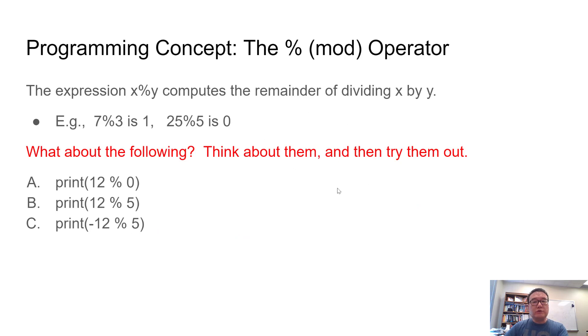The natural way to do it in programming is to use the mod operator, which is expressed using this percent symbol. When we write x mod y, that means we want the remainder of dividing x by y. For example, 7 mod 3 is 1, because when we divide 7 by 3, the quotient is 2 and the remainder is 1.